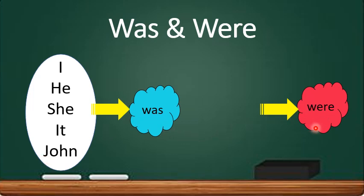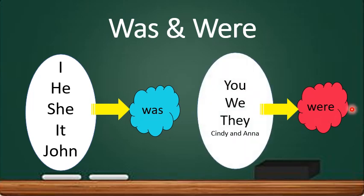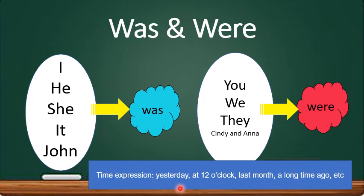If there are more than one person or for the plural nouns or pronouns, we have to use were. Like you were, we were, they were, Cindy and Anna were. Usually, we use was and were with the time expression such as yesterday. Like yesterday, I was at the library. He was sleeping at 12 o'clock last night.